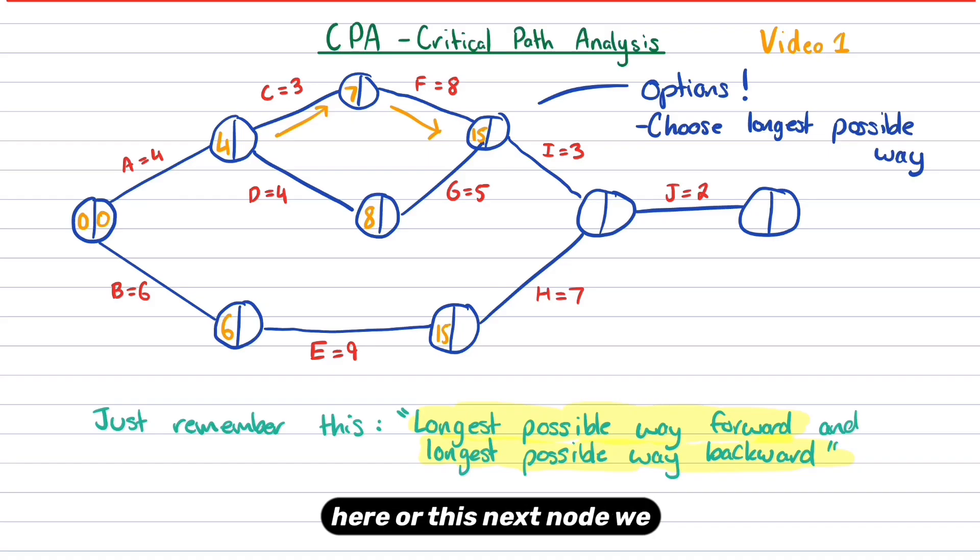Now, this next box here, or this next node, we would call it, we've got some options. We've got three different options, actually. We can go along the bottom, we can go along the middle, so which would be A, D, G, or we can go along the top, which would be A, C, F, and I. Now, remember, we want to choose the longest possible way.